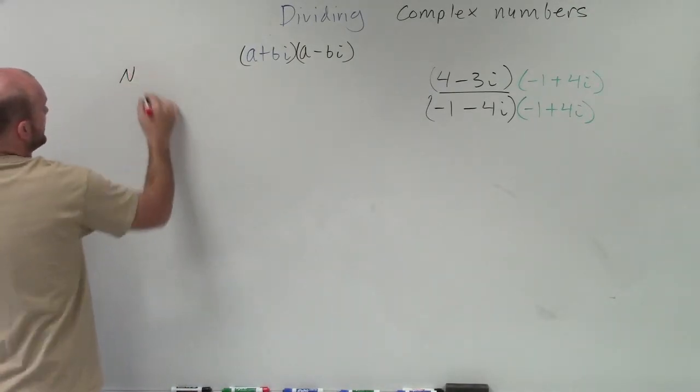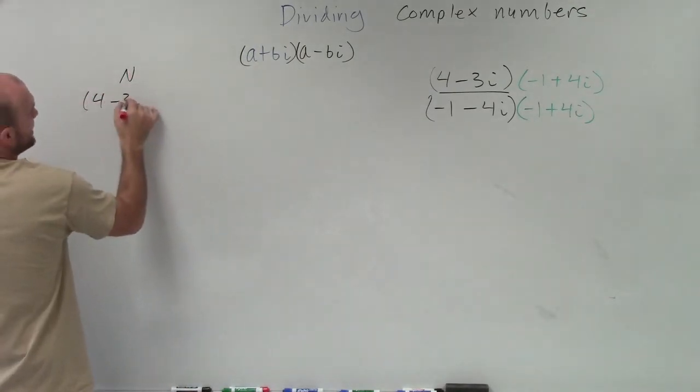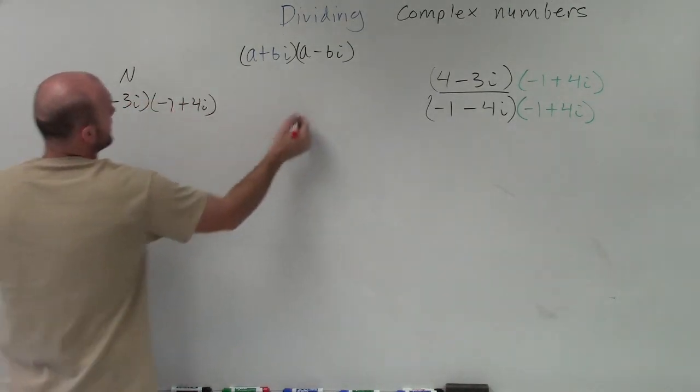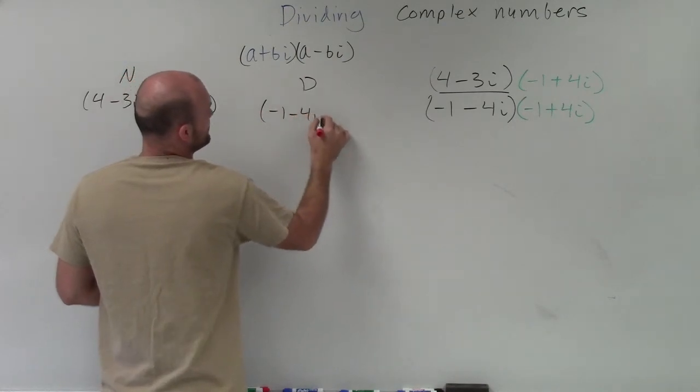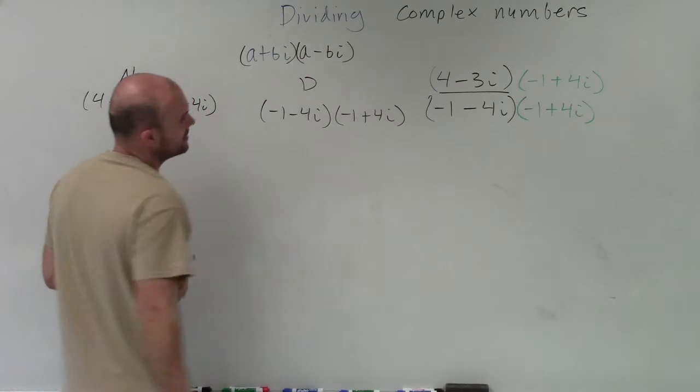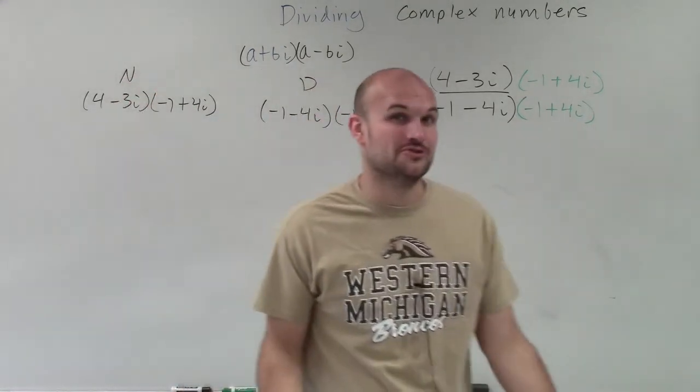So what I have here is my numerator. I'm going to have 4 minus 3i times negative 1 plus 4i. And then for my denominator, I have negative 1 minus 4i times negative 1 plus 4i. So I need to find the product for the numerator and the denominator.